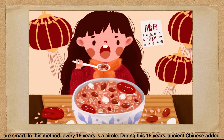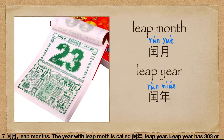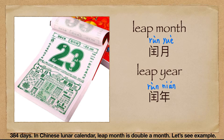Our ancestors were smart. In this method, every 19 years is a cycle. During these 19 years, ancient Chinese added 7 闰月, leap months. The year with leap months is called 闰年, leap year. A leap year has 383 or 384 days.